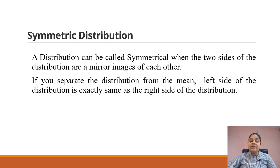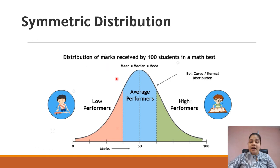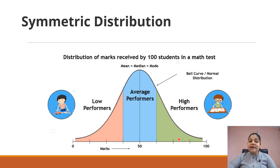In symmetric distribution, the distribution can be divided into two parts and each part is a mirror image of each other. For example, if we plot the marks of a hundred students in a math test, very few students achieve very low marks — those lie in the orange region — and very few students achieve very high marks above 85 or 90, lying in the green region. But most students have average marks lying in the blue region. Plotting these marks gives a bell-shaped curve.